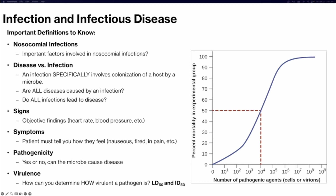Pathogenicity is simply yes or no — can a microbe cause disease? If a microbe can cause disease, then yes, it is a pathogen. Virulence is the degree of pathogenicity — how easily something can cause an infection. We determine how virulent a pathogen is by looking at the LD50 (median lethal dose) or ID50 (median infectious dose). LD50 is talking about mortality; ID50 is talking about morbidity — observing who in the population has experienced that disease.